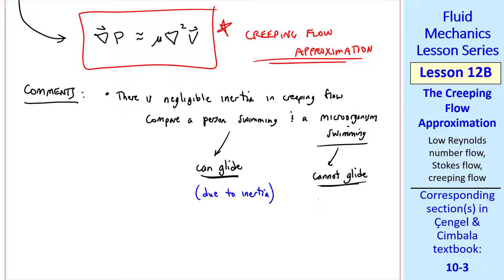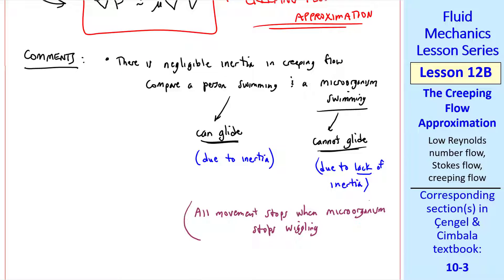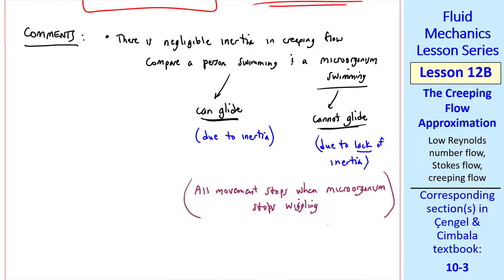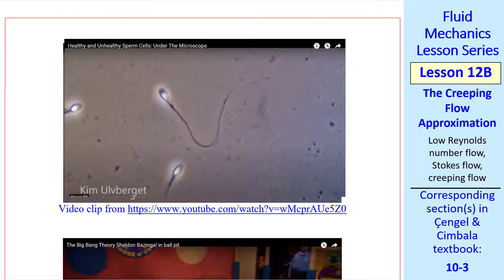We can glide due to inertia. The microorganism cannot glide due to lack of inertia. As a result, all movement stops when a microorganism stops wiggling. It can't glide. I'll illustrate this with the video clip.